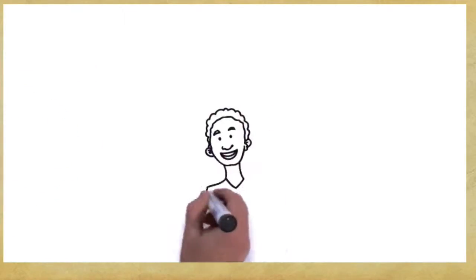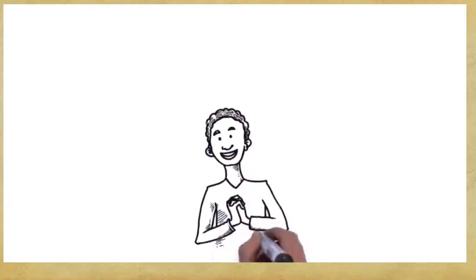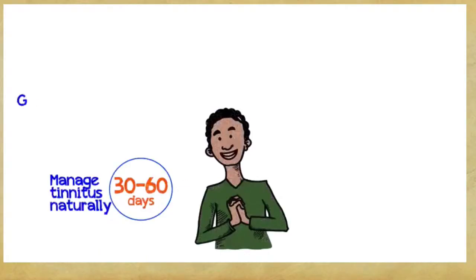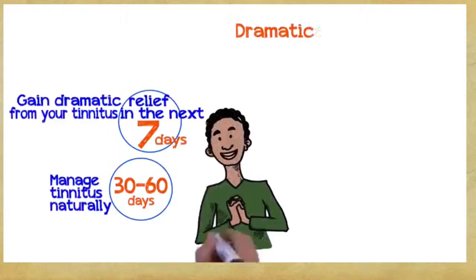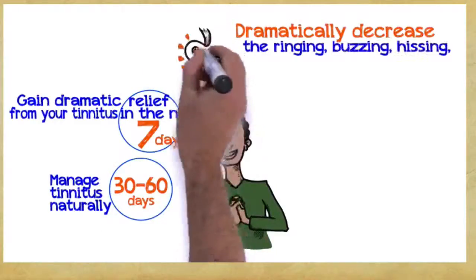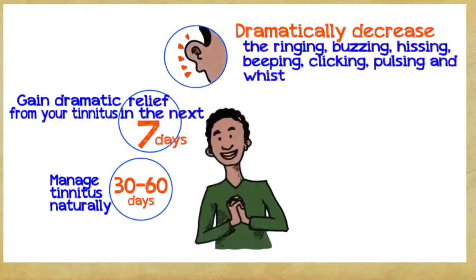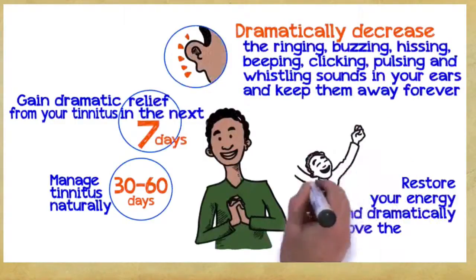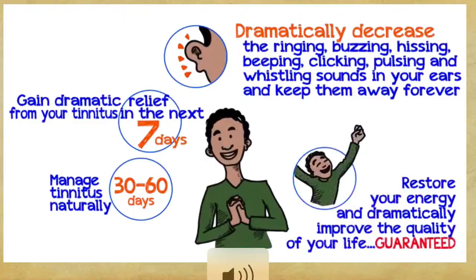So, what can you gain if you embrace these three easy principles? Well, you can manage tinnitus naturally within 30 to 60 days, gain dramatic relief from your tinnitus within the next seven days, dramatically decrease the ringing, buzzing, hissing, beeping, clicking, pulsing, and whistling sounds in your ears and keep them away forever. Restore your energy and dramatically improve the quality of your life, guaranteed.